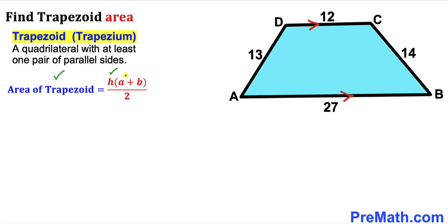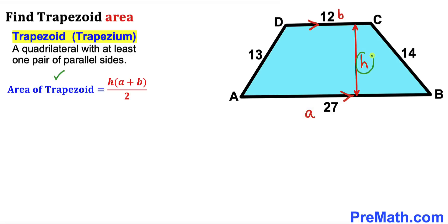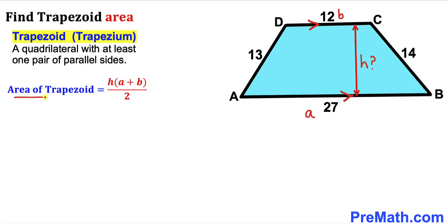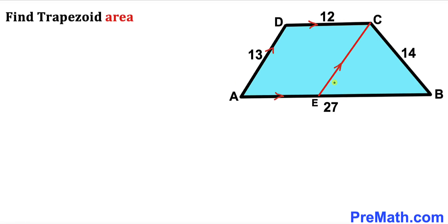Now let's recall the area of a trapezoid formula: Area equals height H times (A plus B) all over 2. Here, base A is 27, base B is 12, however the height H is unknown. So our task is to find the value of height H before we can calculate the area of this trapezoid.